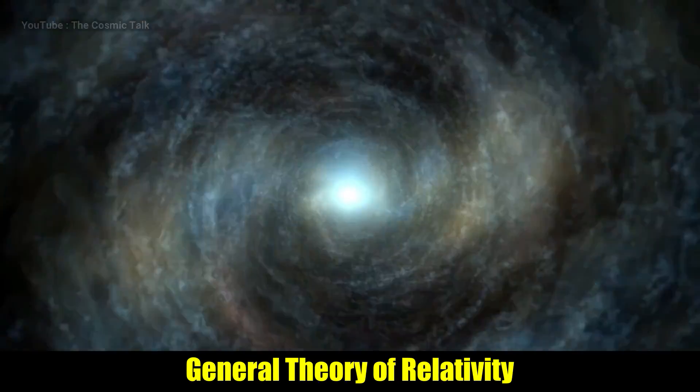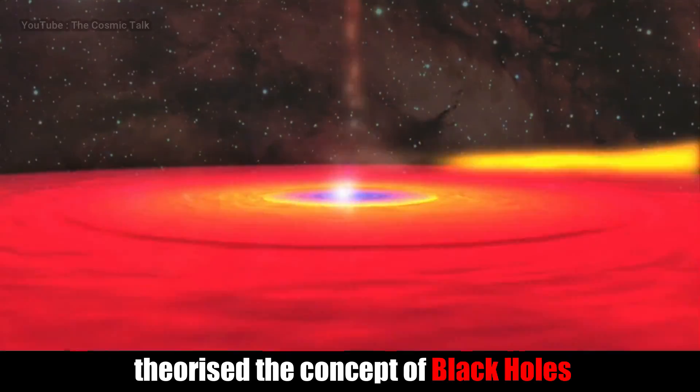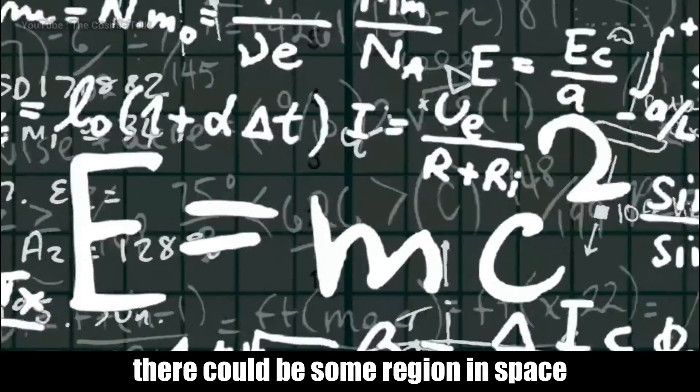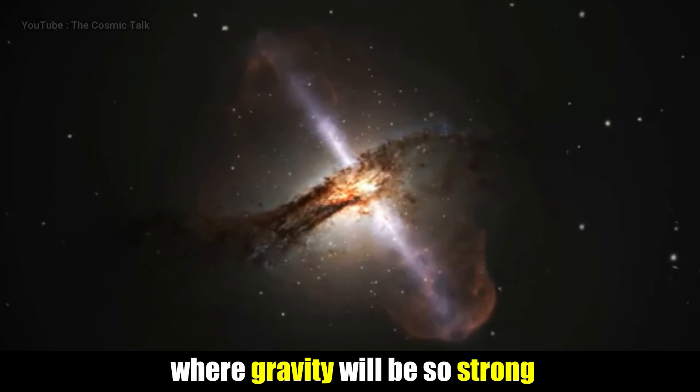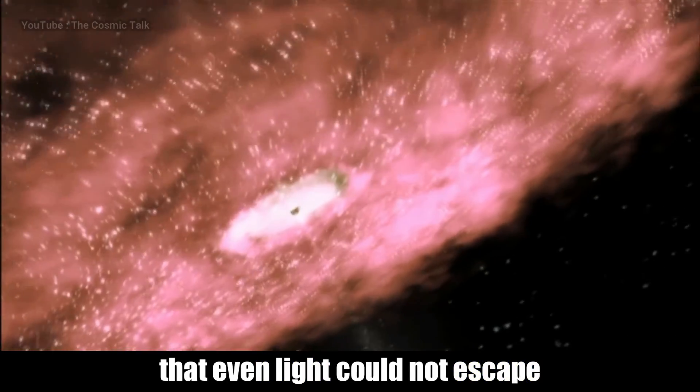With the help of General Theory of Relativity, Albert Einstein theorized the concept of black holes. From his calculations, he said that there could be some region in space where gravity will be so strong that even light could not escape from it.